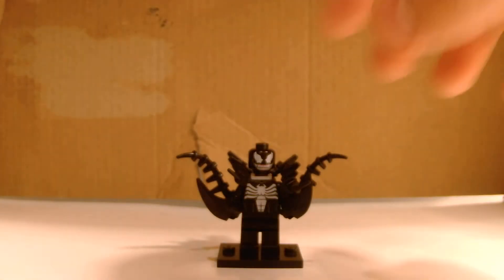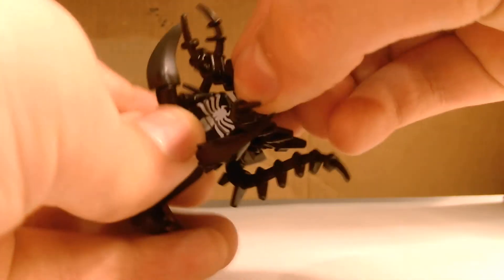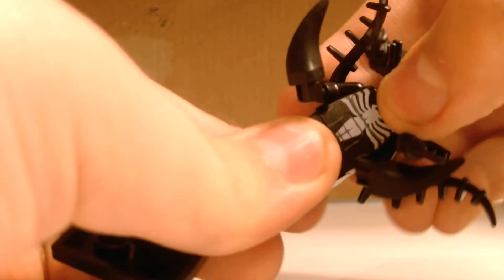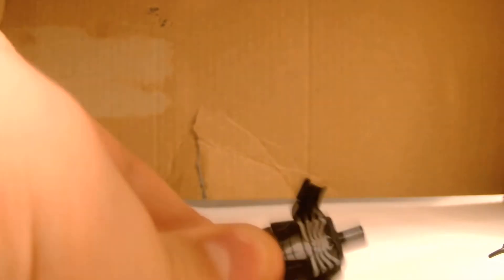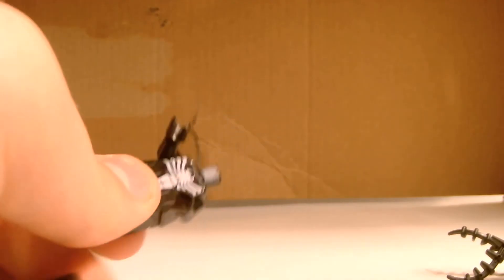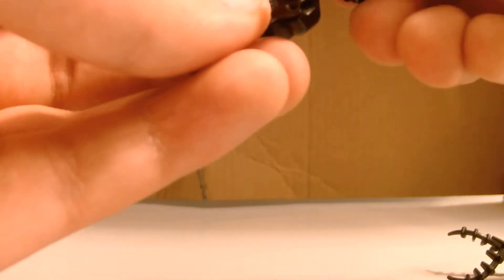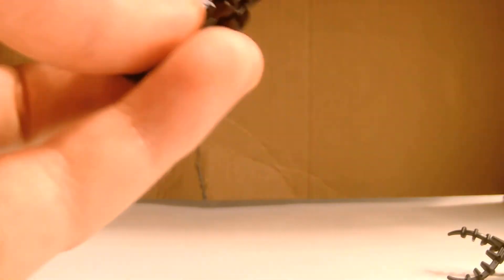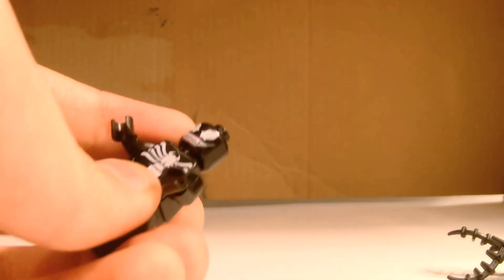Now for the minifig accessory. This is a simple build using, I believe, eight pieces. Designed it by myself, so you can make your Venom minifigures look amazing. So I'm just going to do a how-to build. Let's begin.